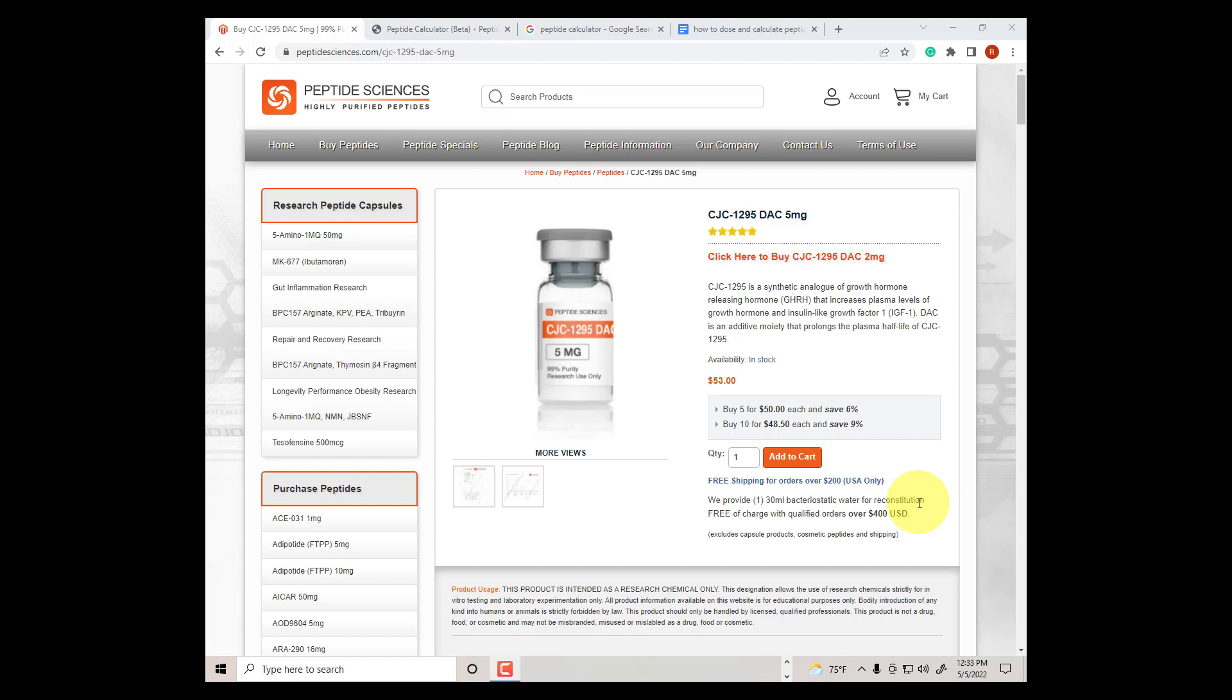The first step is to pick the peptide that you want to dose and calculate. In this example we will use CJC 1295. The peptide comes in two sizes, two milligrams and five milligrams. We will choose the five milligrams.